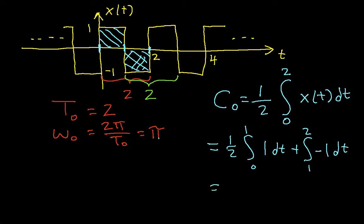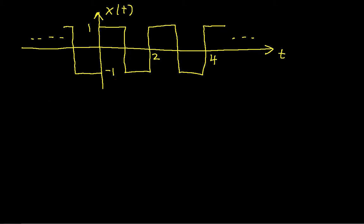So if I work that out, I have ½ times working the first integral out here, I get 1. Working the second integral out, I get negative 1. So it's going to be 0, which is what you would expect. The average of the signal is 0.